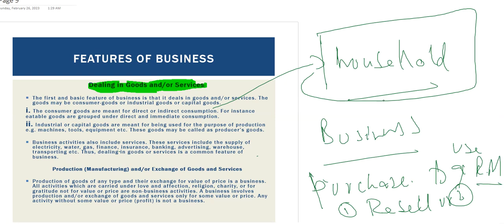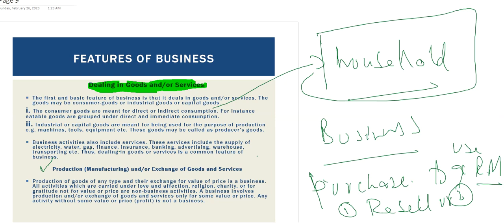Consumer products are those used to satisfy the daily and regular needs of consumers. The second feature is that business activity involves production, manufacturing, and exchange of goods or services. Companies make products and services and deliver them to customers, and in exchange they earn profit.